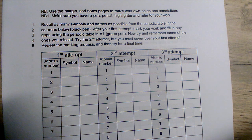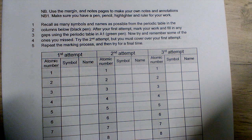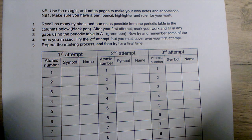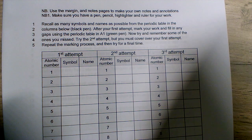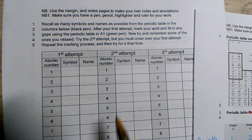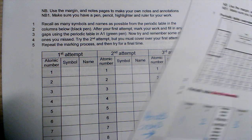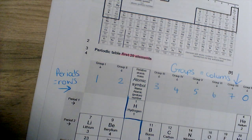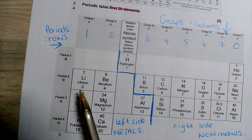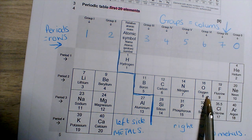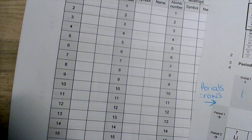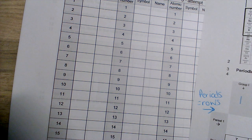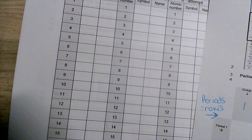On the first attempt, try to do as many as you can — both the symbol and the name. For the second attempt, cover your first attempt answers and try to do it in order. The atomic number is shown here on the periodic table as well. For attempt three, do the same, covering attempts one and two.